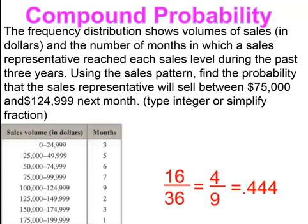Remember, when you have a relative frequency and you don't have a total, you're going to have to find the total. In this case, the total was 36. And when you find the probability, you end up with 0.444.